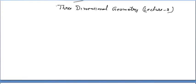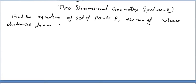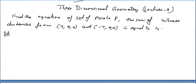This is the second lecture on three-dimensional geometry. The question is: find the equation of the set of points P such that the sum of distances from point A(4, 0, 0) and point B(-4, 0, 0) is equal to 10.